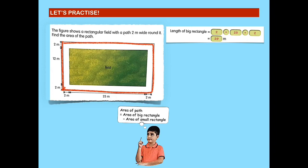To get the area of the big rectangle, let us first multiply its length and breadth. To get the length of the big rectangle, we add 2 meters plus 25 meters plus 2 meters, which is 29 meters. The length of the big rectangle is 29 meters. Next, to find the breadth of the big rectangle, we add 2 meters plus 12 meters plus 2 meters, which is 16 meters. The breadth of the big rectangle is 16 meters.